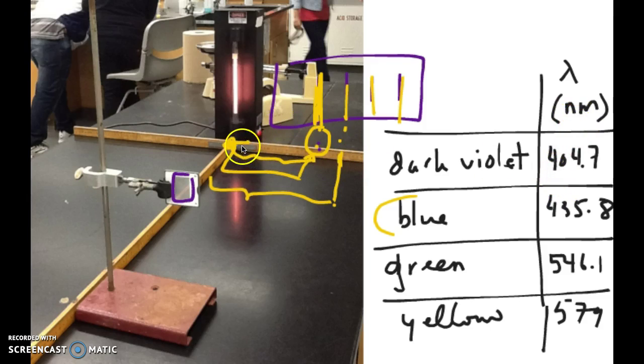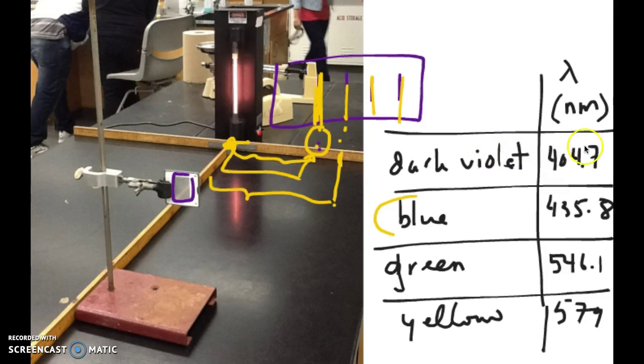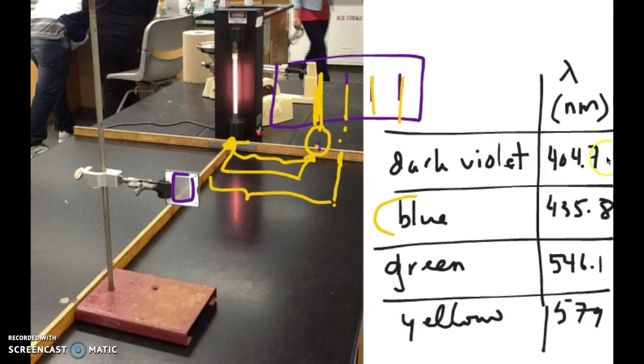So what you do then is you try to find those lines and each line already has a wavelength assigned to them. Now, what you do to calibrate is basically you measure the distance from the center of the meter stick to that line. So let's say this is your dark violet line. So you're going to measure a distance from this to here. And let's say that's 12.3 centimeters. You would write that on your table next to the wavelength. So 404.7 nanometers corresponds to 12.3 centimeters on the meter stick.